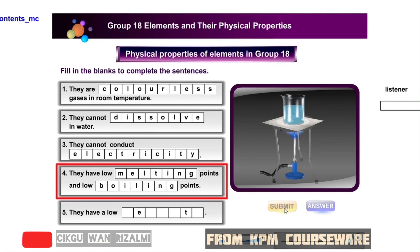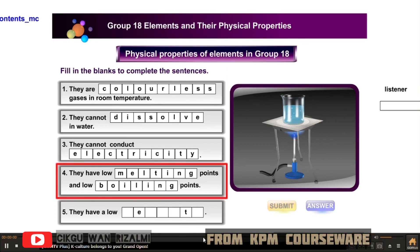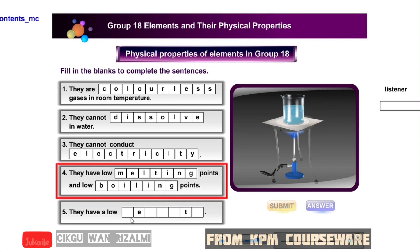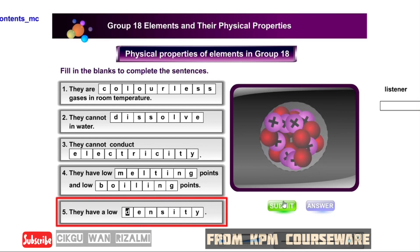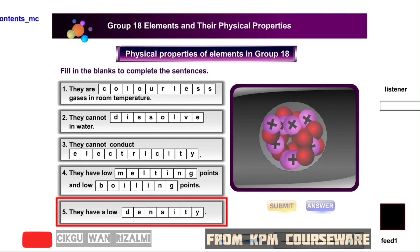Correct. All noble gases cannot conduct electricity and heat. Correct. All noble gases have low melting points and low boiling points. Correct. All noble gases have a low density. Click on the blinking button to proceed.